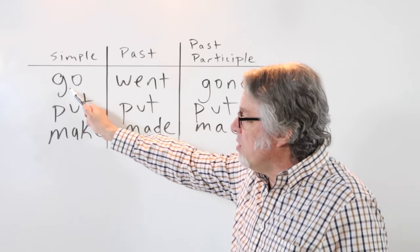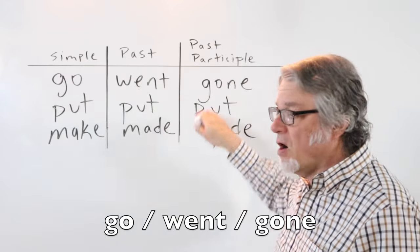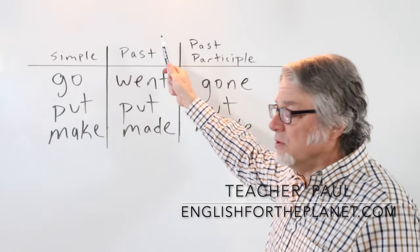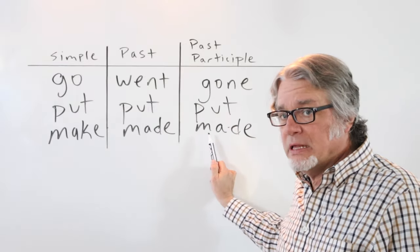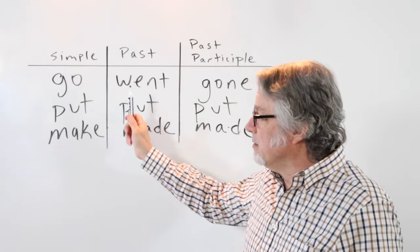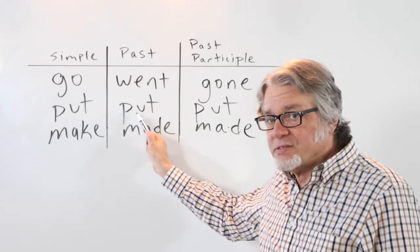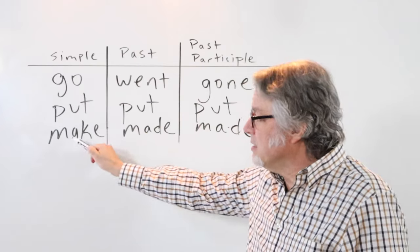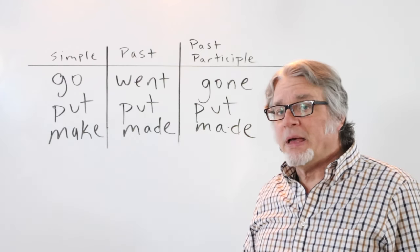In the simple form, the verb 'go' becomes 'went' in the past tense and as a past participle it's 'gone.' When you study the past tense, it's useful to look at how verbs appear in the past tense and as a past participle. Sometimes they're quite different, but sometimes they're the same. The verb 'put' doesn't change in the past tense or as a past participle, and the verb 'make' becomes 'made' in the past tense and stays the same as a past participle.